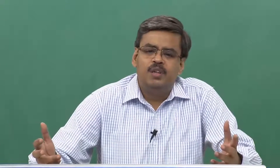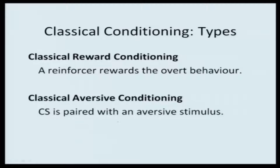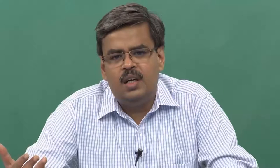In terms of types, classical conditioning can be divided into two: classical reward conditioning and classical aversive conditioning. Reward means reinforcing the behavior. If the dog performs a desired behavior and you give a food pellet, you have reinforced the dog — this is classical reward conditioning. Similarly, if a student gives the correct answer and the teacher praises them, that behavior has been reinforced.